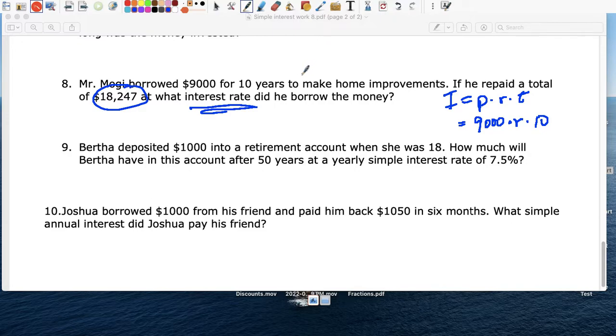So 18,247 minus 9,000, that gives us 9,247. So that's how much in interest, in extra, that he had to pay. So 9,247.